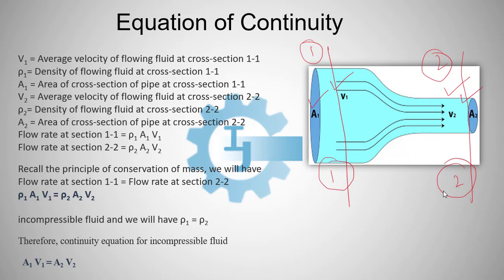Rho 1 is the density of flowing fluid at cross section 1-1 and rho 2 is the density of flowing fluid at cross section 2-2. So, flow rate at section 1-1 is rho 1 A1 V1 and flow rate at section 2-2 is rho 2 A2 V2.